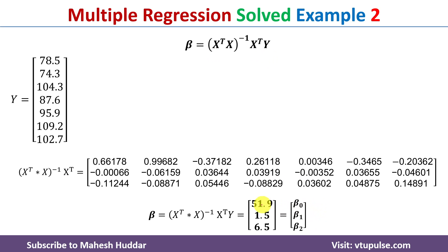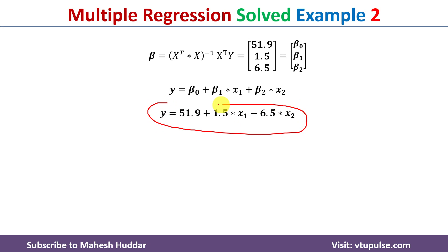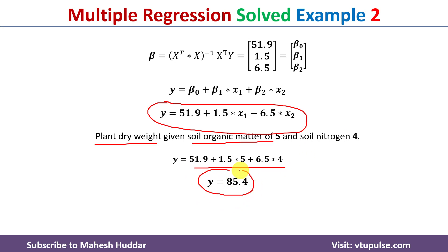After performing the full matrix multiplication, the beta matrix gives: β0 = 51.9, β1 = 1.5, β2 = 6.5. Substituting these into the regression equation, the final equation is: y = 51.9 + 1.5·x1 + 6.5·x2. To predict plant dry weight when soil organic matter is 5 (x1 = 5) and soil nitrogen is 4 (x2 = 4), we substitute and solve: y = 51.9 + 1.5(5) + 6.5(4) = 85.4. So the predicted plant dry weight is 85.4.